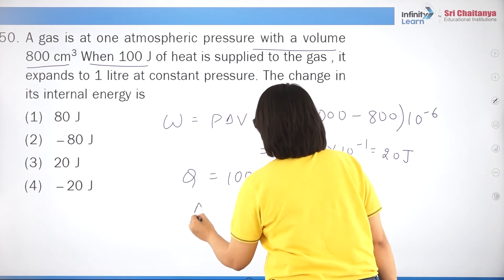Question 33: in a thermodynamic process, 30 J of heat is released from the gas and 10 J of work is done on the gas. Using Q = W + (Uf − Ui): −30 = −10 + (Uf − 30). So Uf − 30 = −20, giving Uf = 10 J.